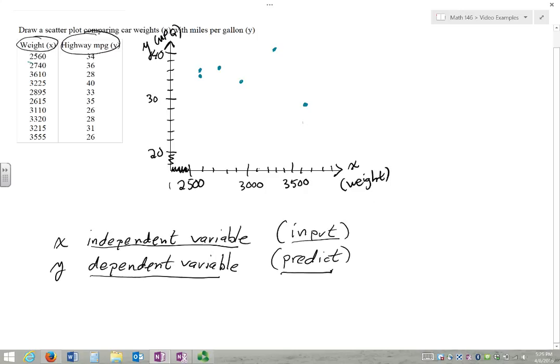3110 and 26. 3320, 3200, 3433. And that's 28. 32, 15, 31. And 3555. So 3500. Well, we didn't need to go all the way up to 4000 here, I guess. But anyway, 3500. This is 3600. So it's going to be roughly in the middle here. And that's going to be 26.